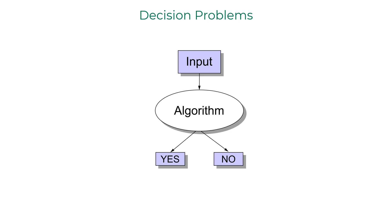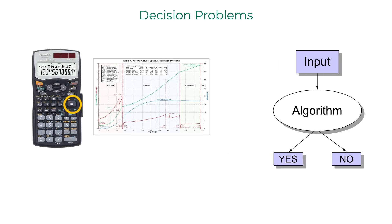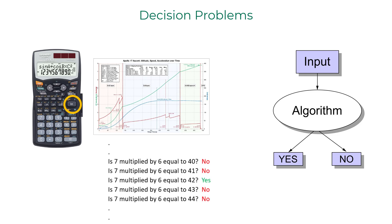But real-life programs do more than just print yes or no, right? Then why aren't we focusing on them? The answer lies in the fact that all functional problems can be reformulated as decision problems. So if we build a theoretical framework that applies to decision problems, it would automatically apply to functional problems as well.